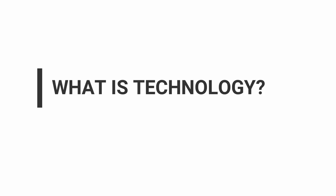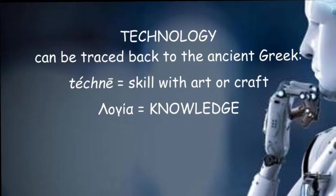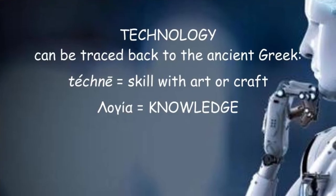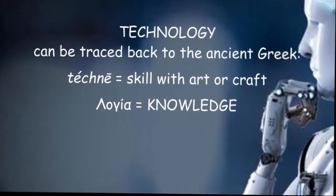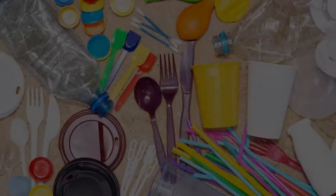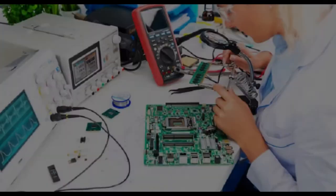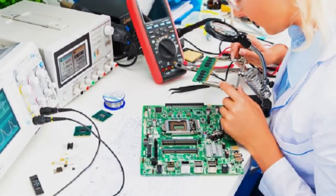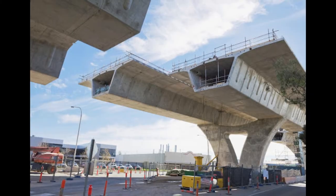What is technology? The origin of the word technology can be traced back to the ancient Greek word techni, meaning skill with art or craft. Making plastics or paper, designing electronic circuits, and constructing bridges are very different crafts. However, they are all examples of technology.